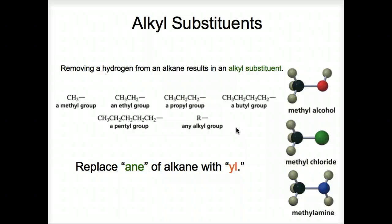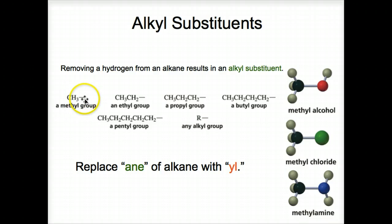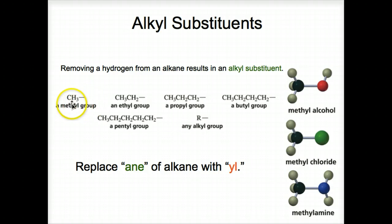Now let's shift gears and look at alkyl substituents. Removing a hydrogen from an alkane results in an alkyl substituent — we see these very commonly. Here's a methyl group: if it was methane, CH₄, it loses a proton and we call it methyl. This bond is between that carbon and some other carbon — it's a branch, as we've seen methyl groups being branches. The line drawn there doesn't mean it's from one of the hydrogens; the three hydrogens are bonded to the carbon, and that bond is from the carbon itself.